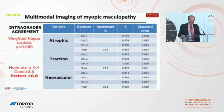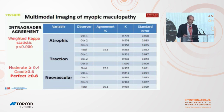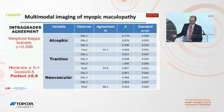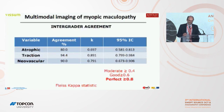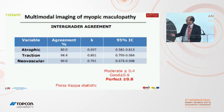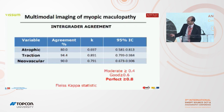The intra-grader agreement results showed more than 90% for the atrophic component — very good results. For traction and neovascular components, 97% and 96% respectively. The weighted kappa for intra-grader agreement was always perfect, except for one case which was only good. For inter-grader agreement — the comparison between three observers — we found 80% for atrophic, 94% for traction, and 90% for neovascular, which are very good results with a very high level of kappa statistic.